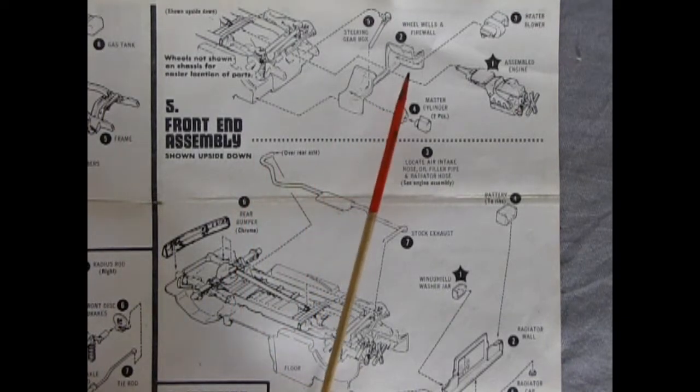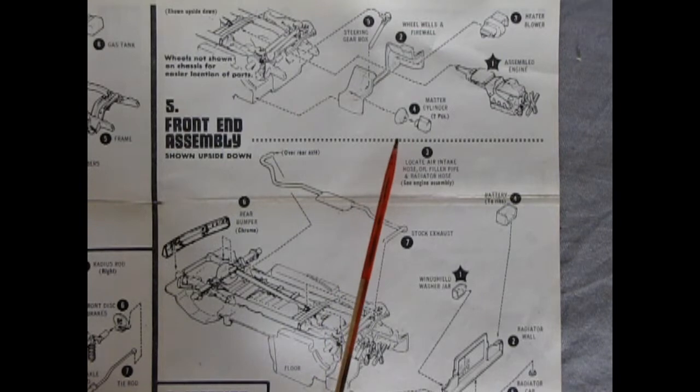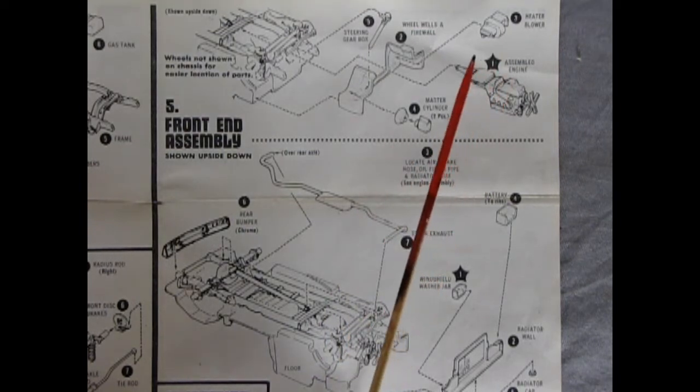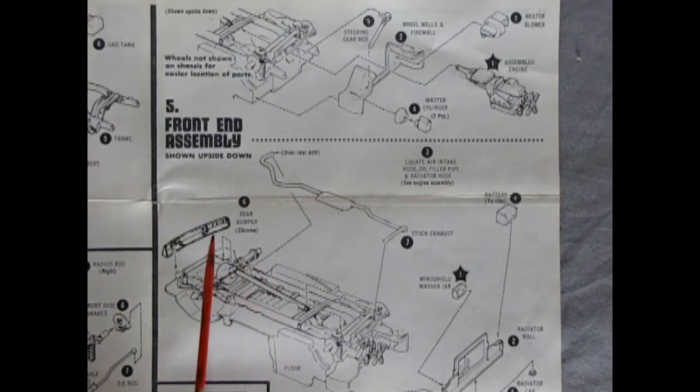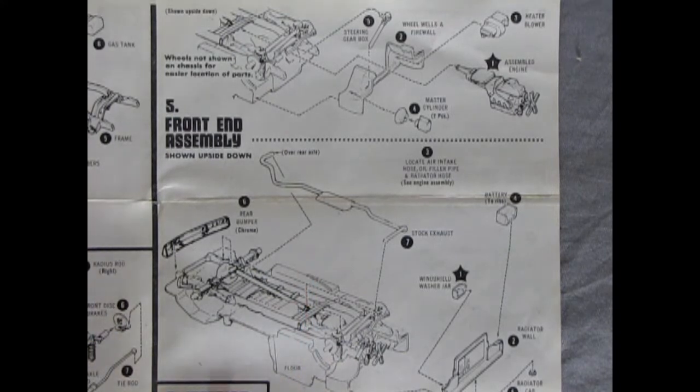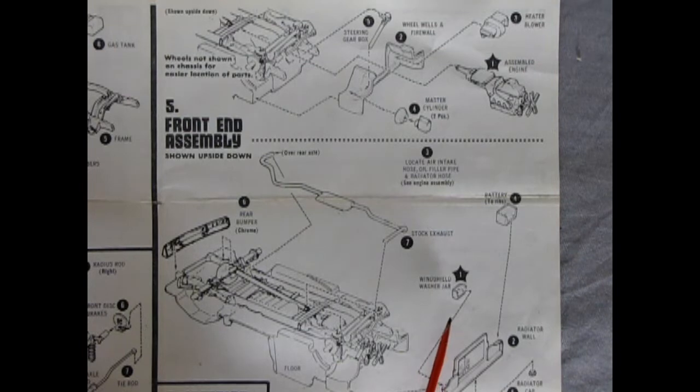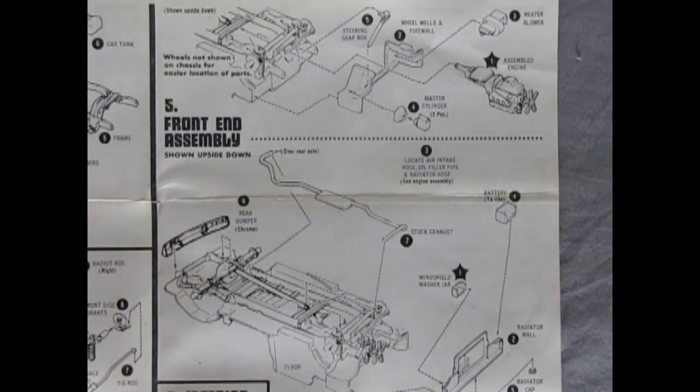Next up we've got the wheel well and firewall as well as the steering box and column, the master cylinder and brake booster, a heater blower and then our engine will pop up in here. Then we've got this rear bumper and the exhaust manifold which goes on here with a nice muffler to keep it all nice and quiet. And then we've got our radiator wall, radiator cap, windshield washer bottle and a battery to supply the voltage to this beast.